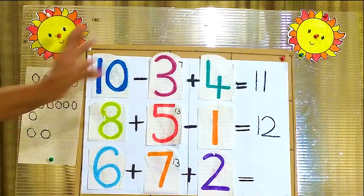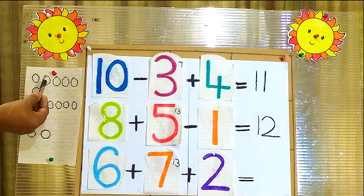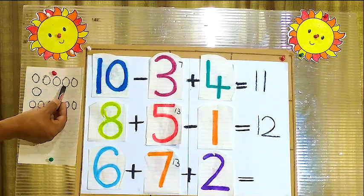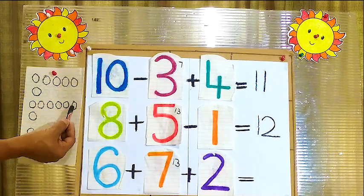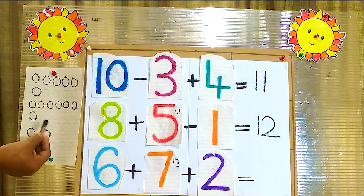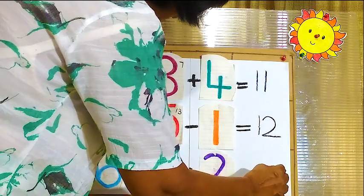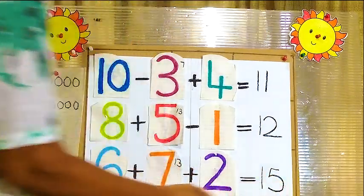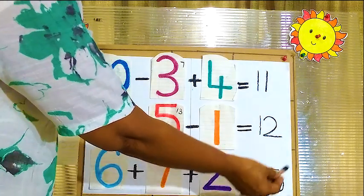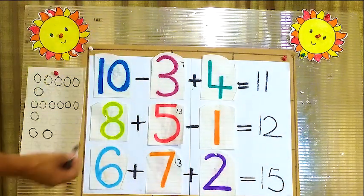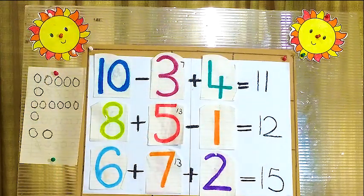Now we have to count all the balls together and write them. 6 balls here, 7 balls here, 2 balls here. Now we have to count all the balls together: 1, 2, 3, 4, 5, 6, 7, 8, 9, 10, 11, 12, 13, 14, 15. The answer is 15. Now 6 plus 7 plus 2 equals 15. The answer is 15.